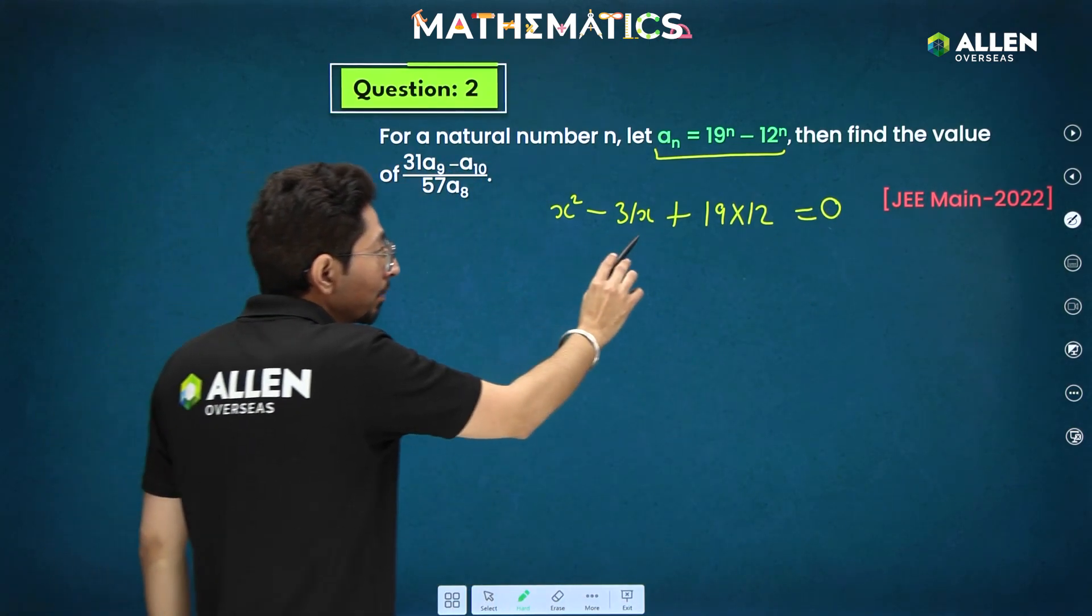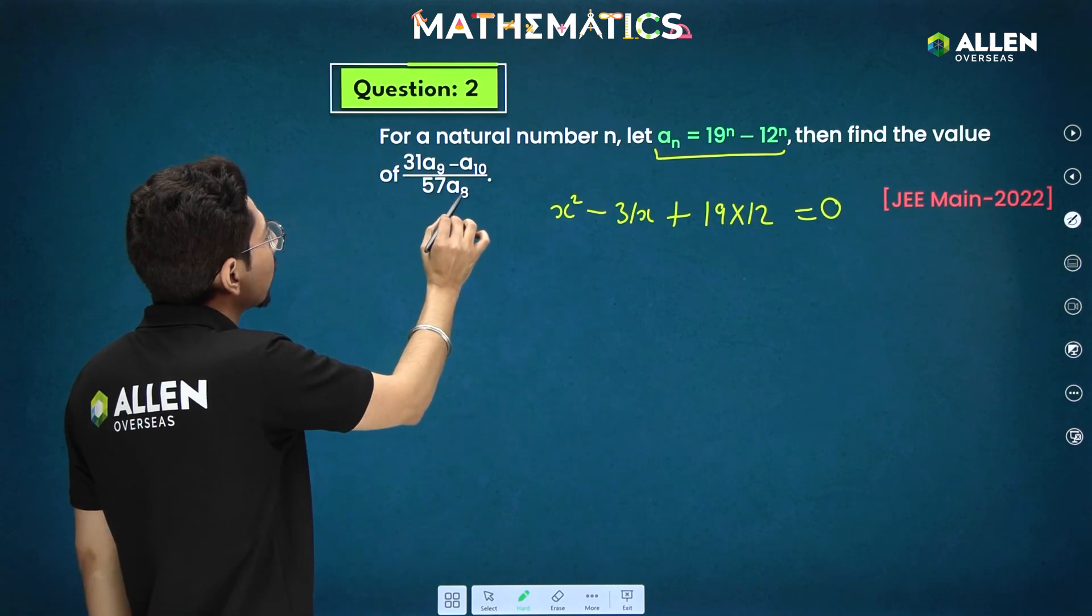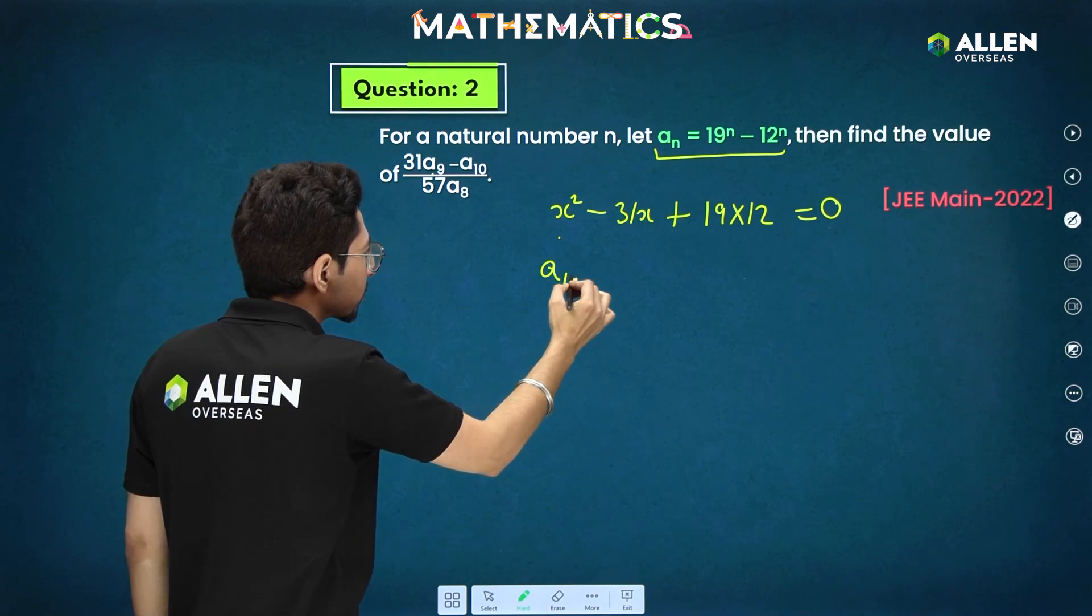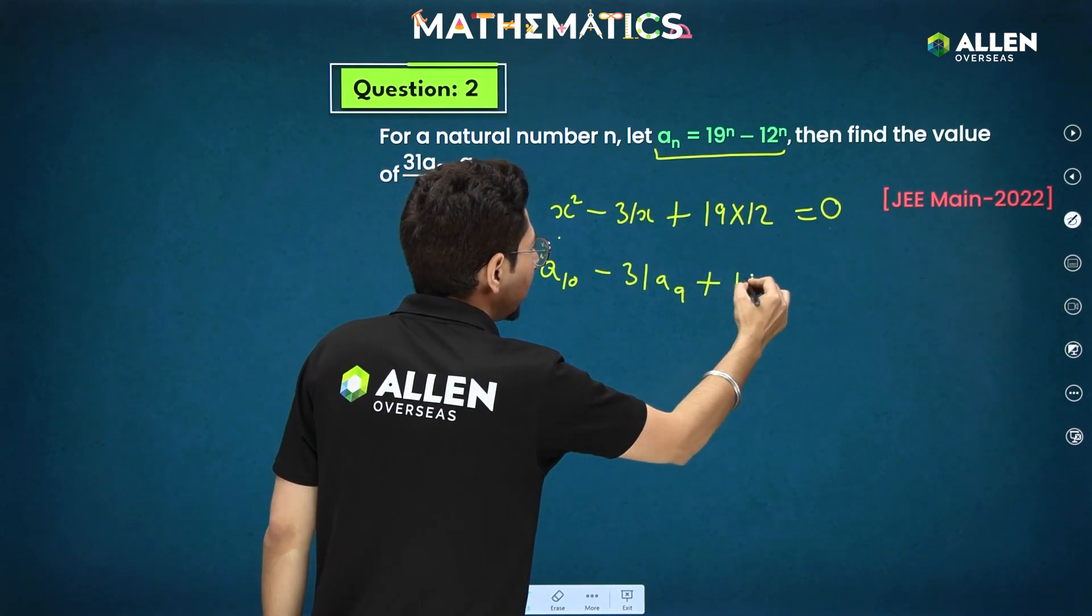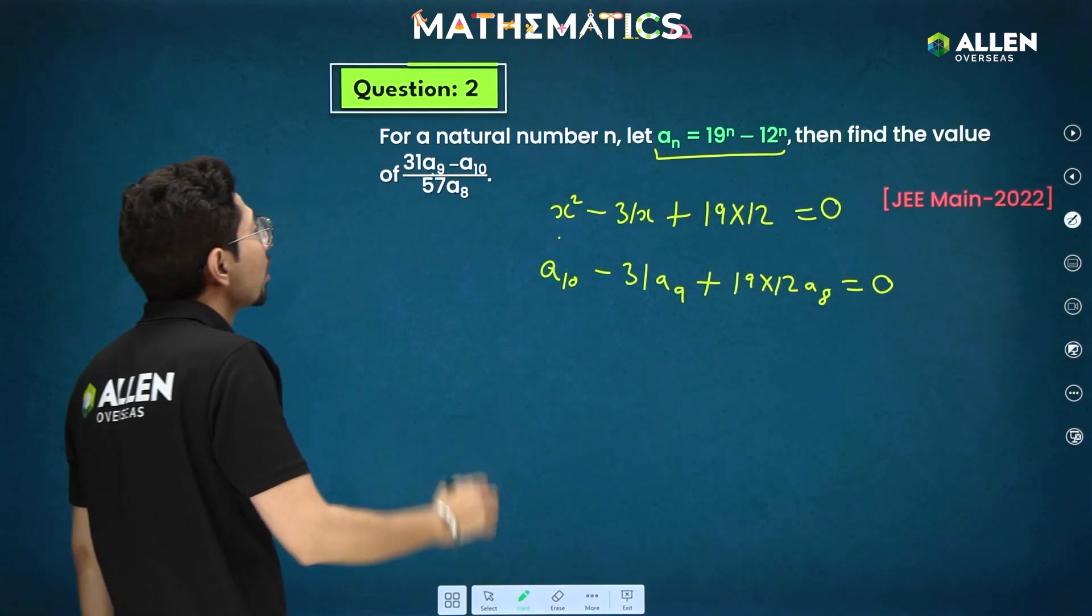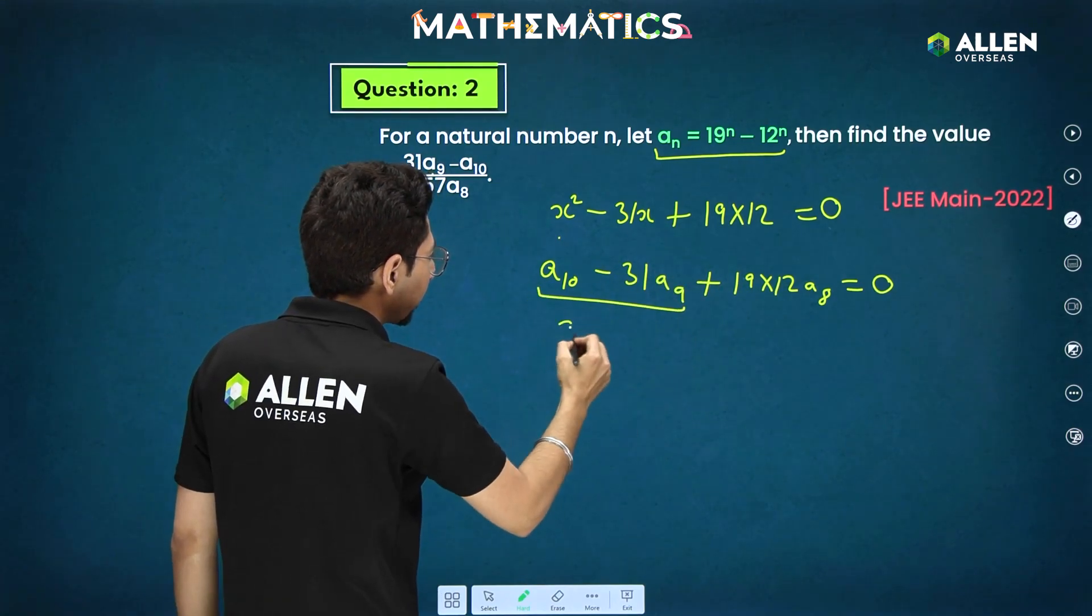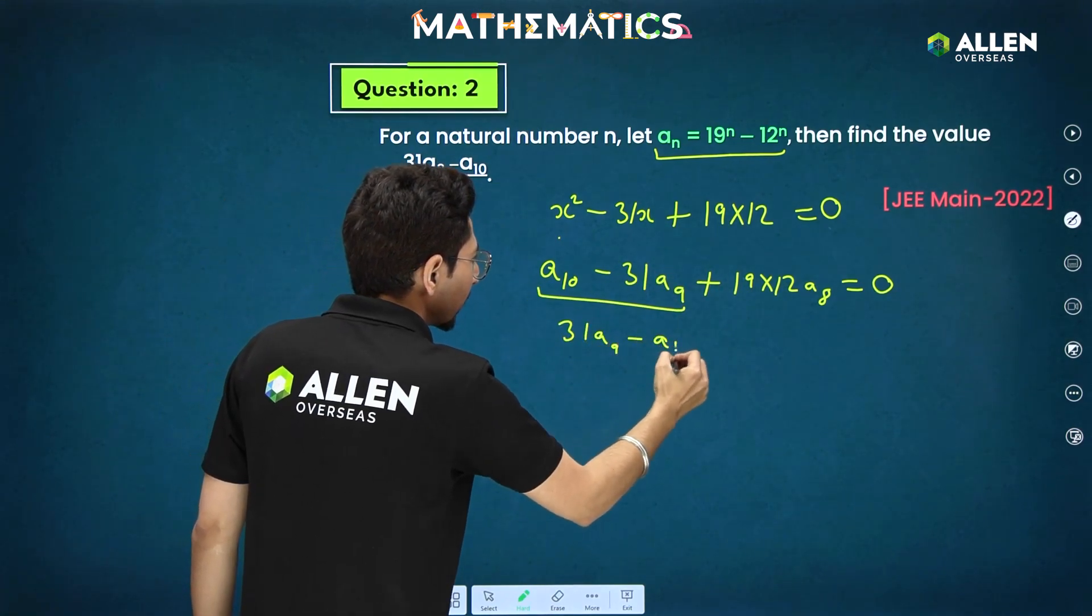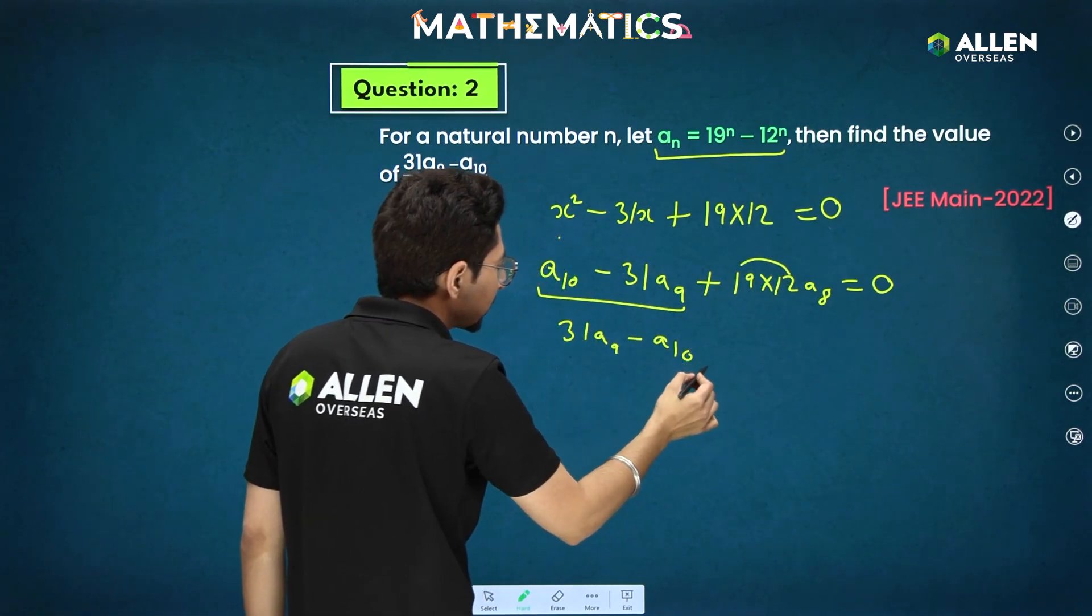Now we can directly apply Newton's theorem here that will be with respect to this we have to apply 8, 9, 10. So clearly this will be a10 only first term minus 31 a9 plus 19 into 12 a8. This is equal to 0. But we require 31 a9 minus a10. So this term on the right hand side. This part is divided here that is 57 a8. So 19 into 3 will be 57.